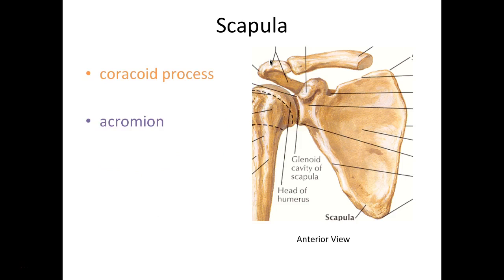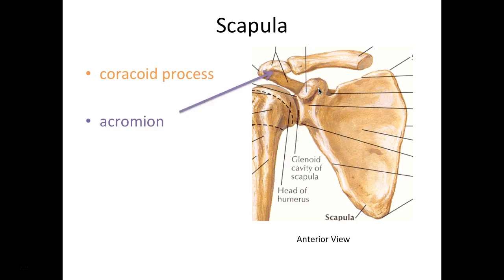Now we have two processes. First, the coracoid process — this means crow's beak, and if you compare it to a crow's beak, that's exactly what it looks like. A process — add this to your terminology list — means an outgrowth of bone. You can see this with the acromion or acromial process, which is also an outgrowth of bone.